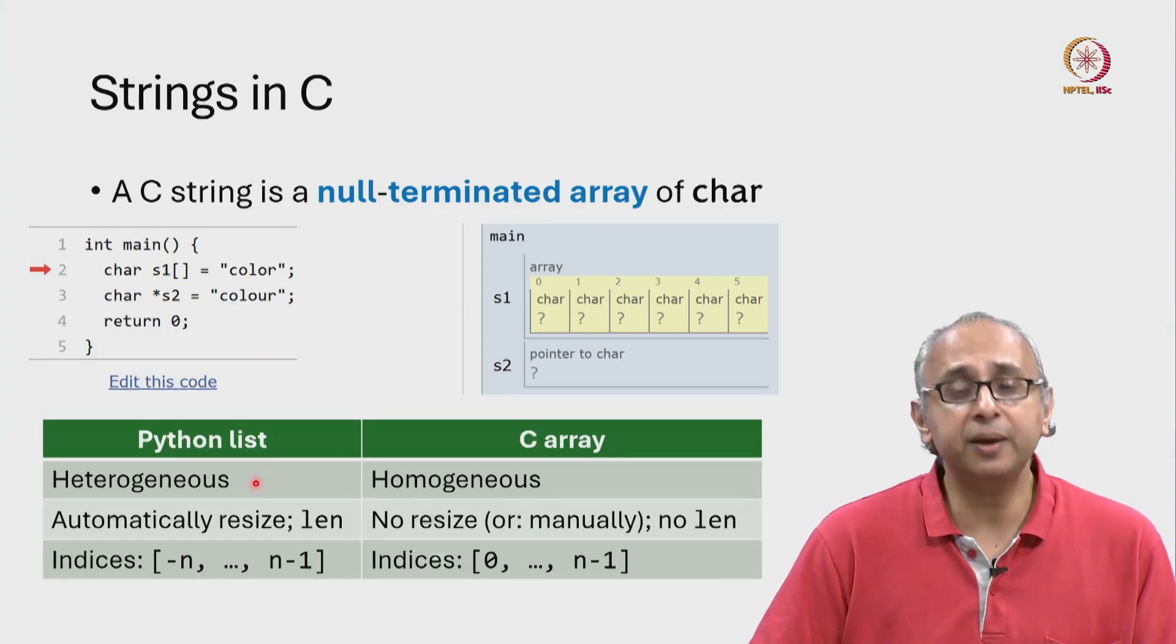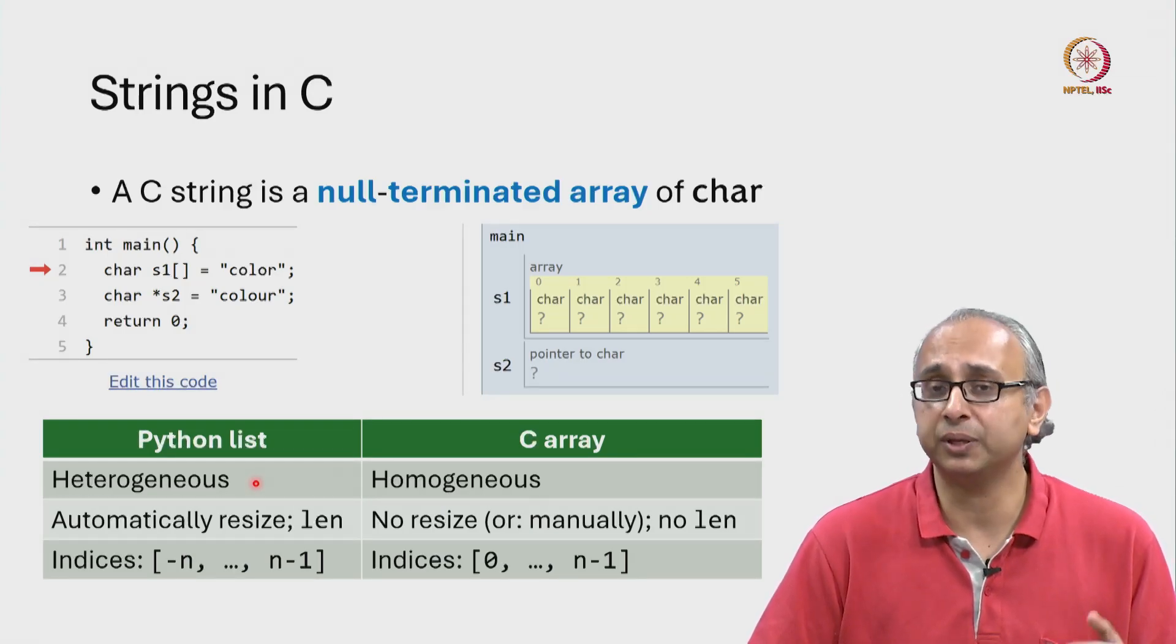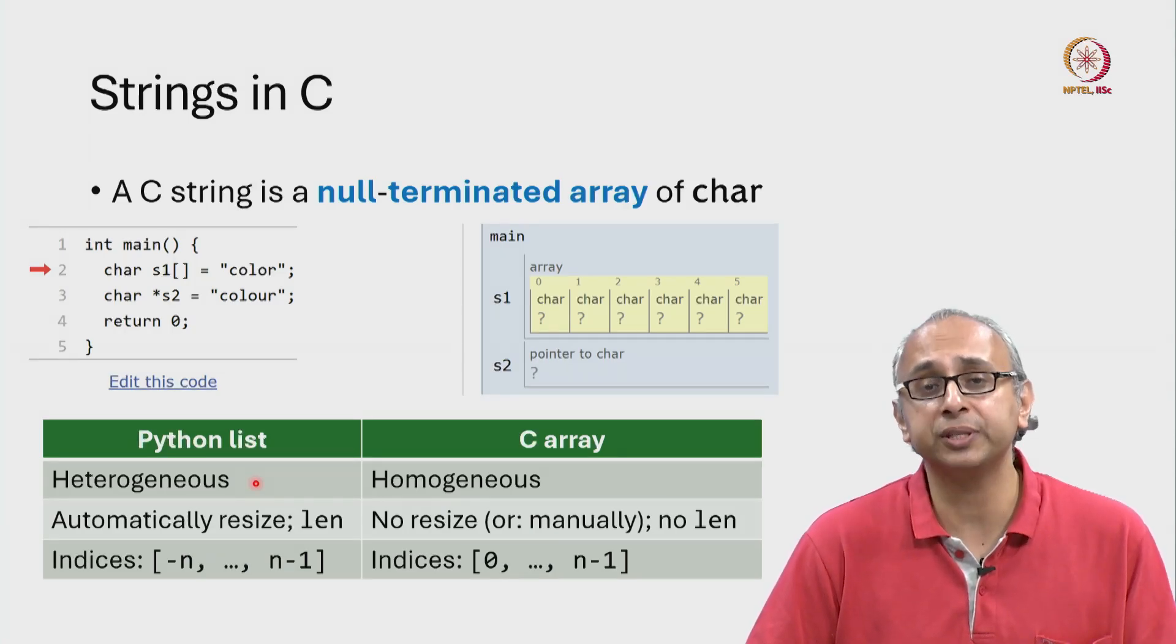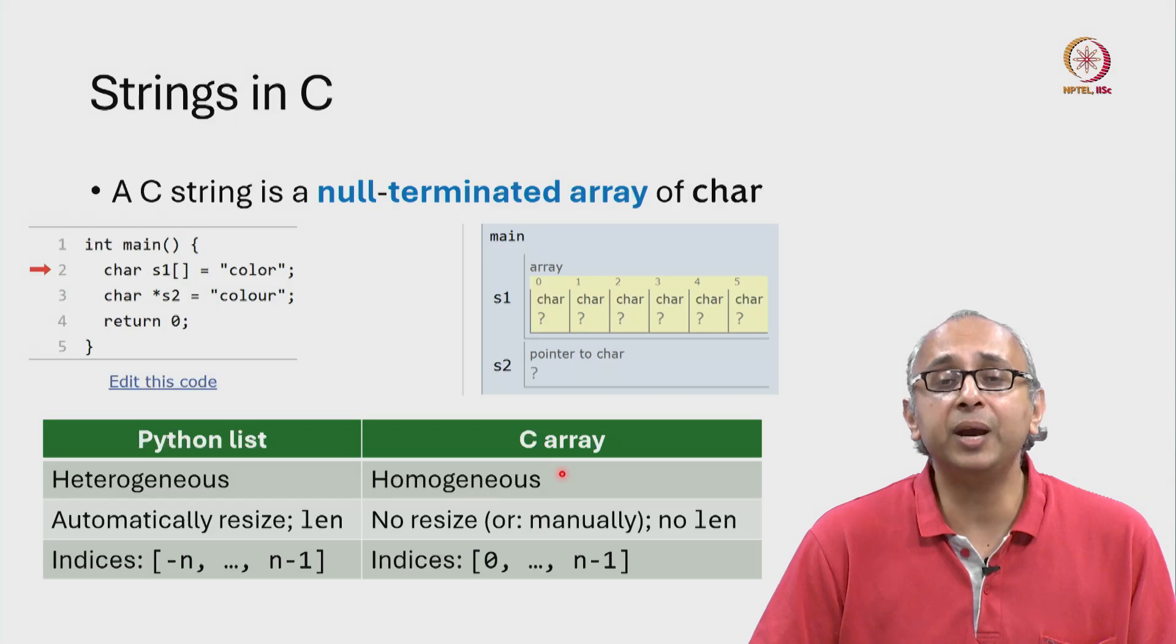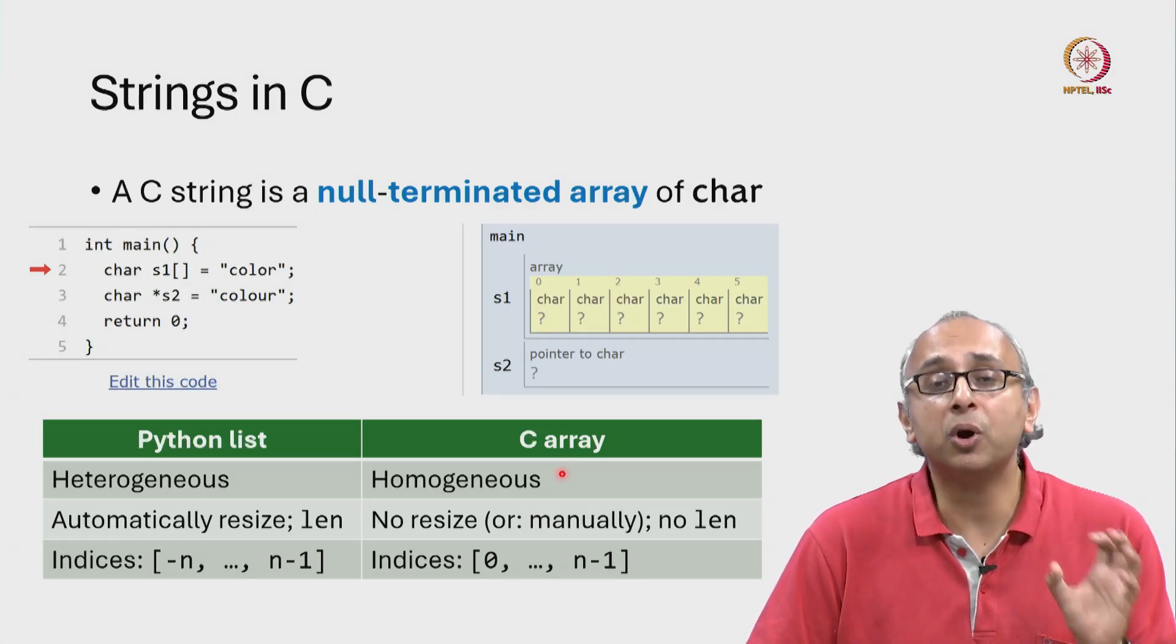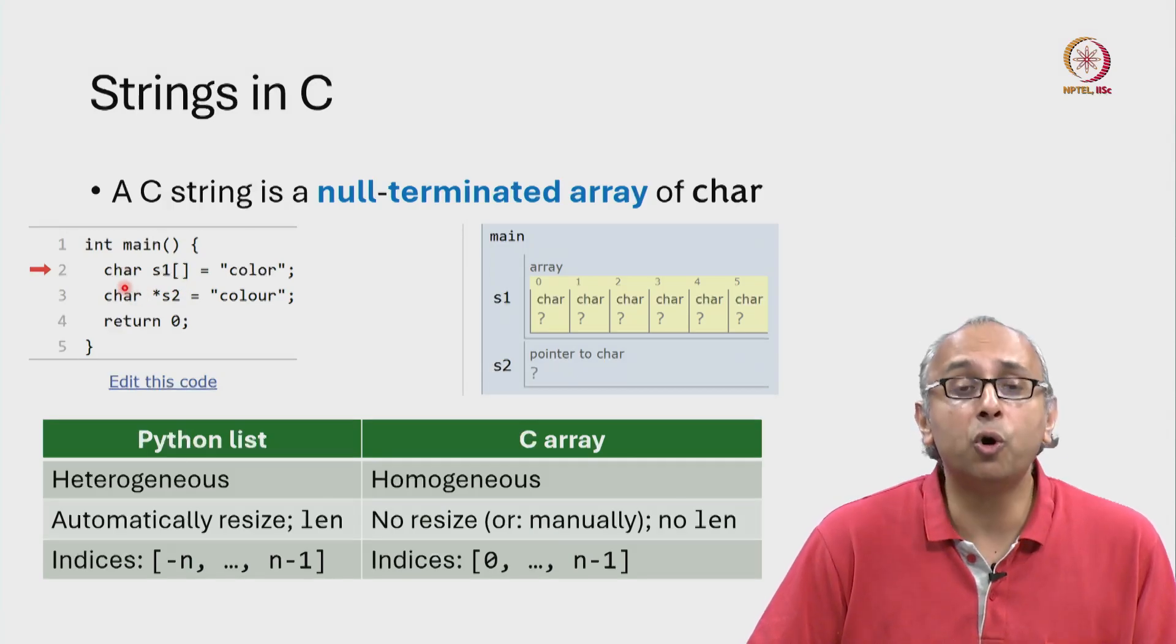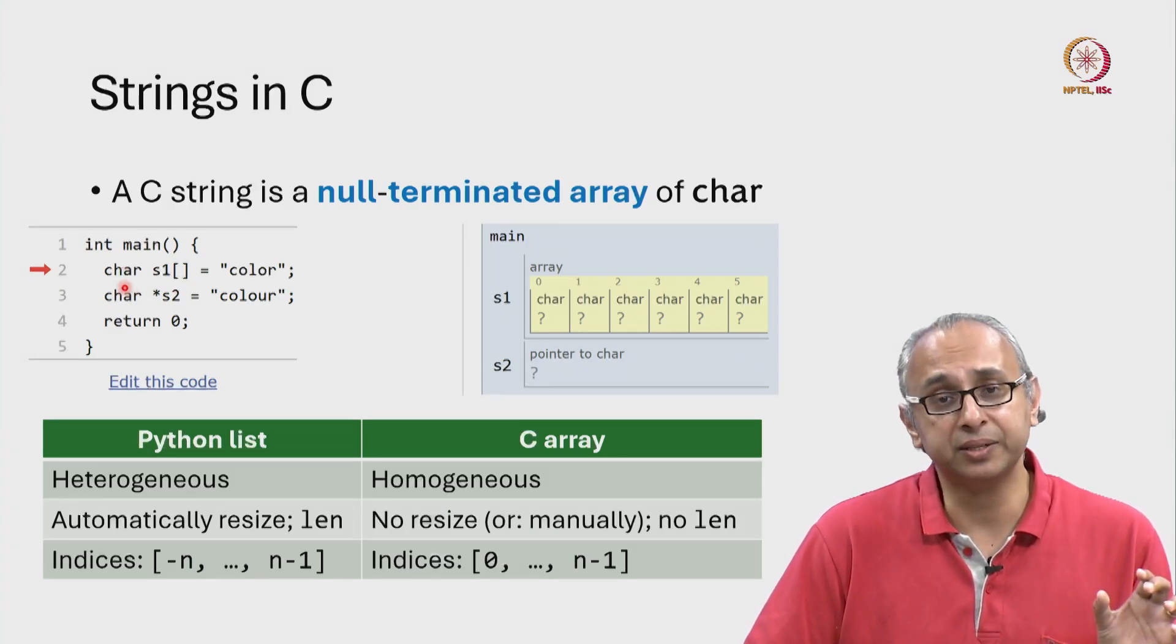So firstly, a Python list can be heterogeneous. As we have seen, the objects in that list don't have to be of the same type. In contrast, an array in C is homogeneous. So we are saying please make an array of only characters. It can only store characters.